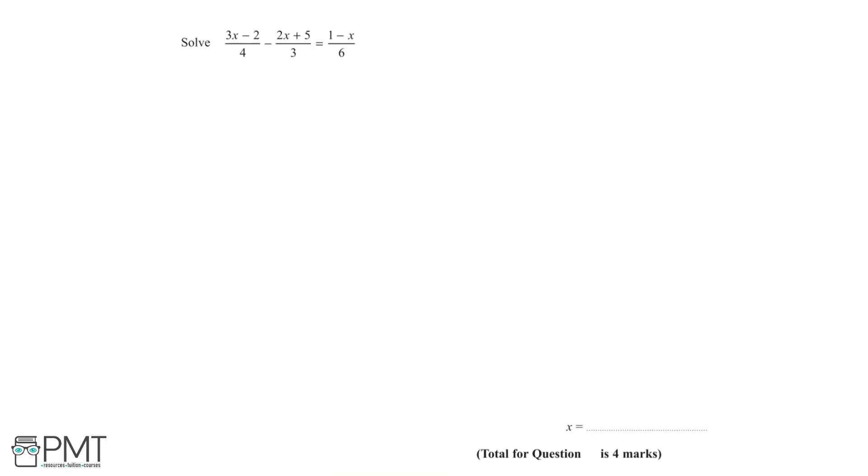In this question, we're asked to solve the equation 3x minus 2 over 4 minus 2x plus 5 over 3 equals 1 minus x over 6. Let's first focus on the left-hand side of the equation.